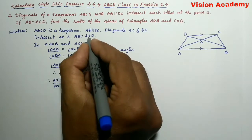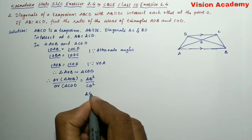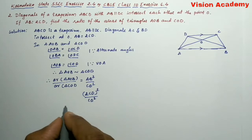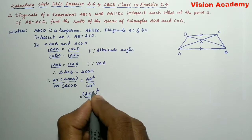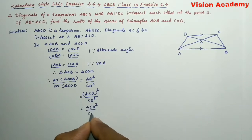Here, AB is 2CD. Here, we will write in place of AB, 2CD whole square divided by CD square. So, 2CD whole square is 4CD square divided by CD square. This CD square will get cancelled. We remain with 4 by 1.